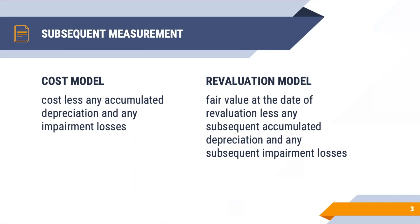Take note that when you choose a model, you should consistently use this model for each class of property, plant, and equipment. It's a class. So for example, for land you use the revaluation model, it is okay that for the class of machinery you use the cost model, as long as you consistently apply that model to that whole class of PPE. In the cost model, PPE are measured at cost less any accumulated depreciation and any impairment losses. While in the revaluation model, it is measured at the revalued amount — the fair value at the date of revaluation less any subsequent accumulated depreciation and any subsequent impairment losses.